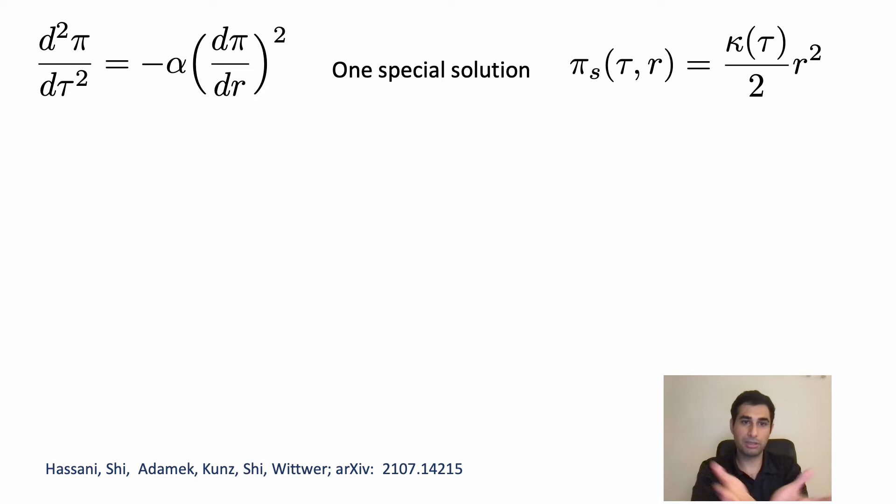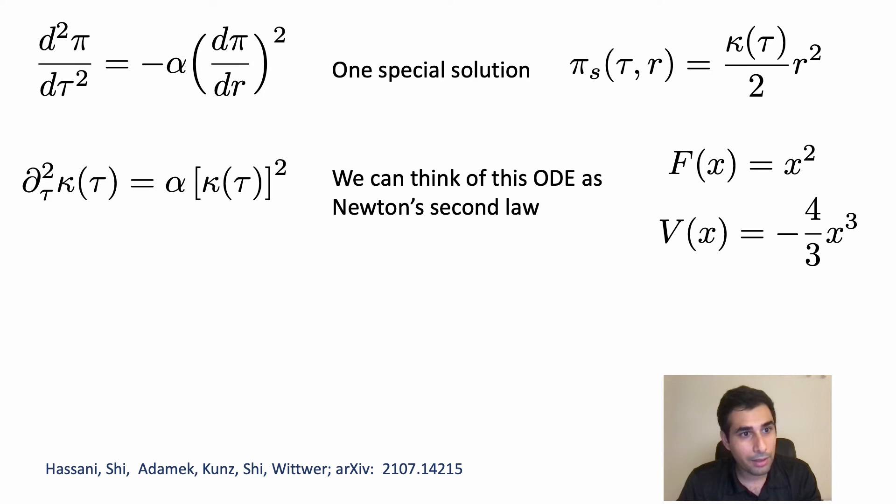And if you put this whole solution into the PDE you obtain an ODE for the curvature of this potential well or this quadratic function. And what you can see is that this ODE which tells you that the κ, the curvature, double dot equal to α κ², you can think of it as Newton's second law with the force x² and the force x²